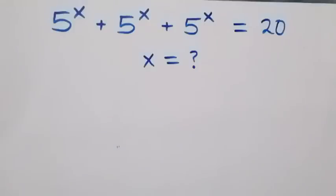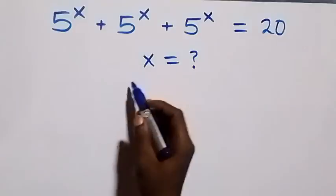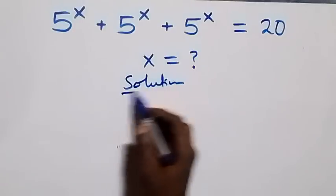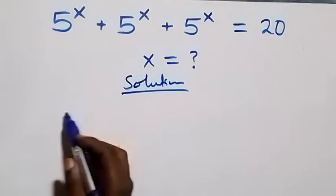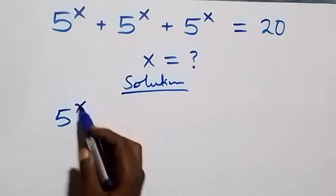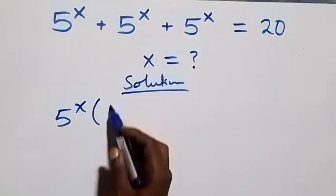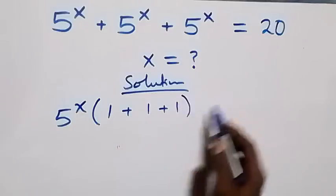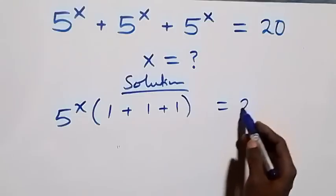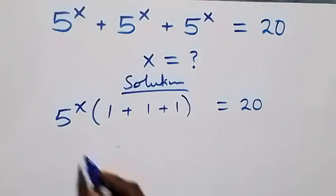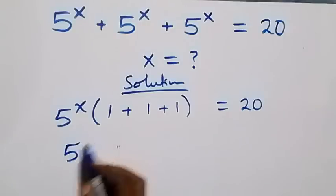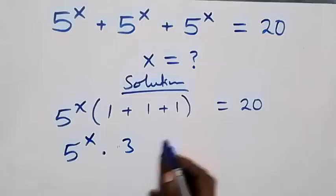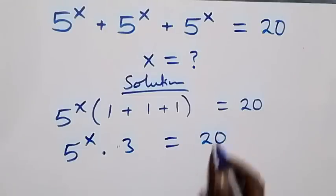Hello, you are welcome. How to solve this nice exponential equation. On the left hand side we can factor five raised to power x out, and we have one plus one plus one left here, which equals twenty on this side. This is the same thing as five raised to power x times three equals twenty.